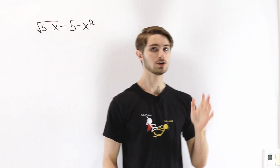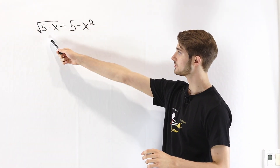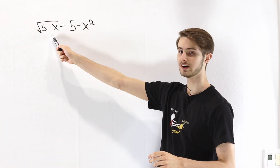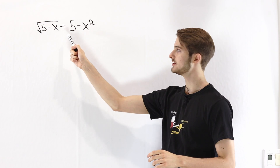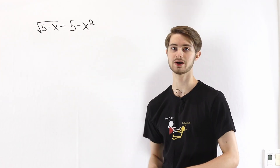We are going to find all real solutions to the equation square root of 5 minus x equals 5 minus x squared.